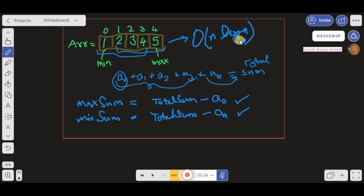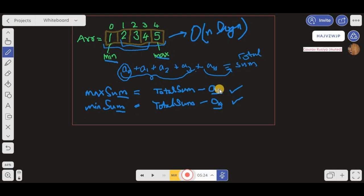Our solution will not be efficient. But friends, isn't a0 the minimum value and a4 the maximum value? So yes, if we get to know the minimum and maximum value in any unsorted array, then we can find the total sum, subtract the minimum value to get the maximum sum, and subtract the maximum value from the total sum to get the minimum sum.